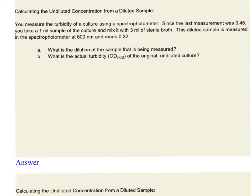When using a spectrophotometer, turbidities are not accurate above a reading of 0.5. Since the last measurement was 0.46, it's necessary to dilute the sample prior to taking the measurement.